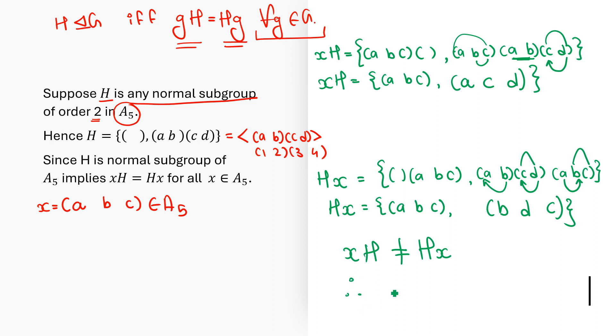Therefore H cannot be a normal subgroup of A5. And since any normal subgroup of order 2 will look like this, we can easily conclude it cannot have a normal subgroup of order 2. It was an easy proof. If you have any doubt, difficulty, or question, please let me know in the comment section. Bye-bye!